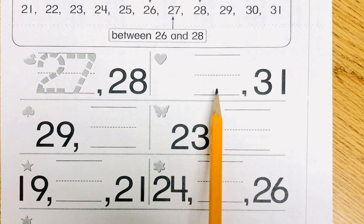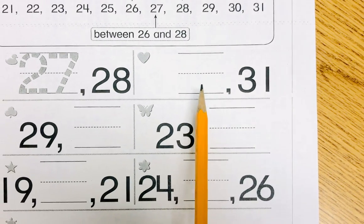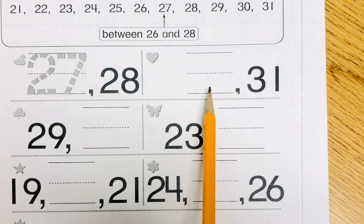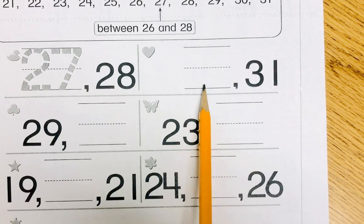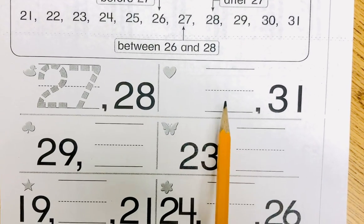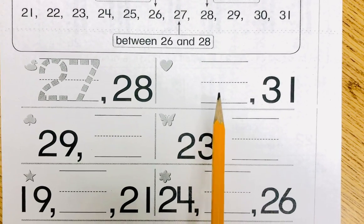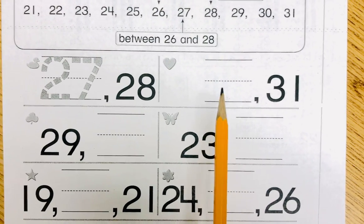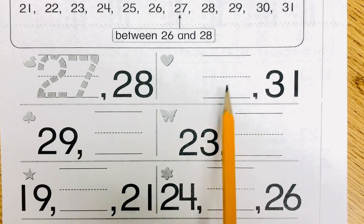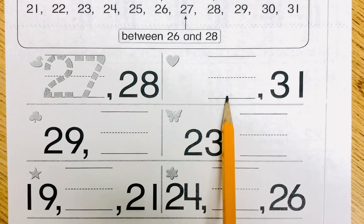1, 2, 3, 4, 5, 6, 7, 8, 9, 10, 11, 12, 13, 14, 15, 16, 17, 18, 19, 20, 21, 22, 23, 24, 25, 26, 27, 28, 29, 30, 31. So what would you write? What number comes before 31? 30. Good.